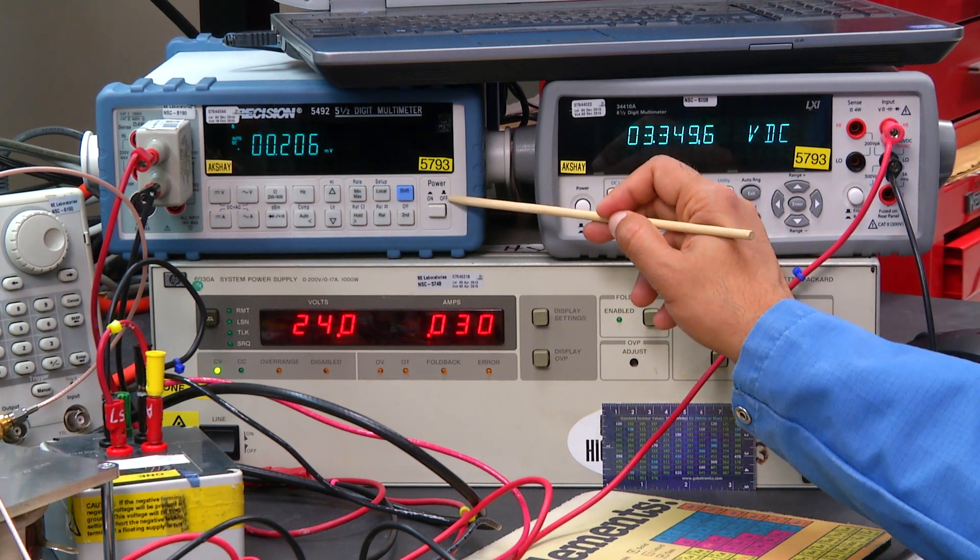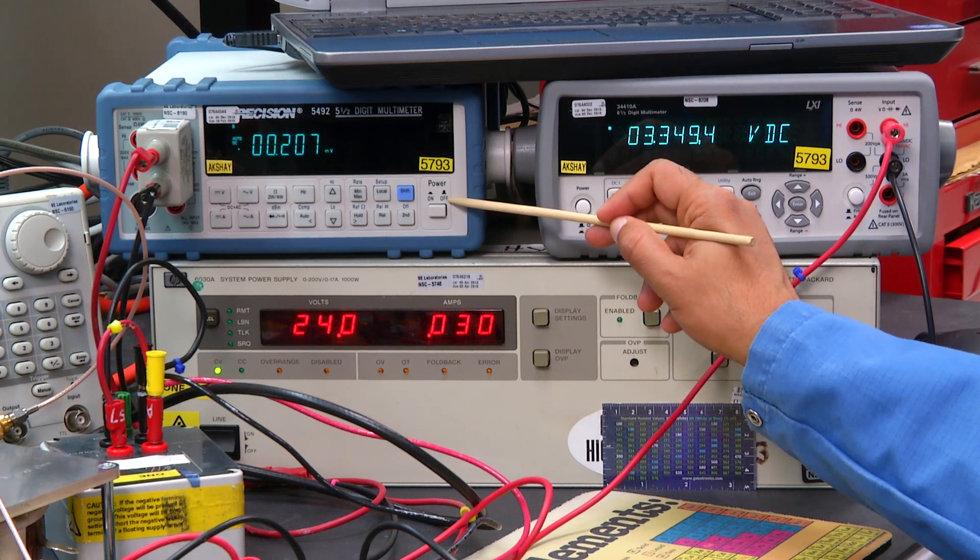DMM2 is used to monitor the steady DC load. It is reading 200 milliamps.